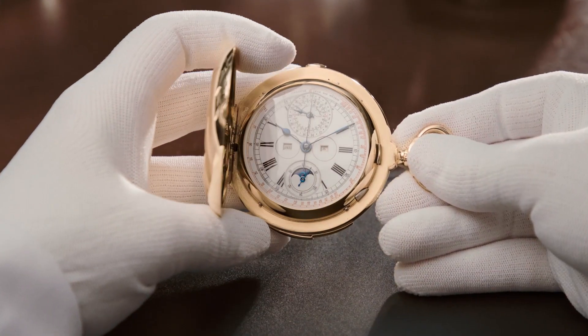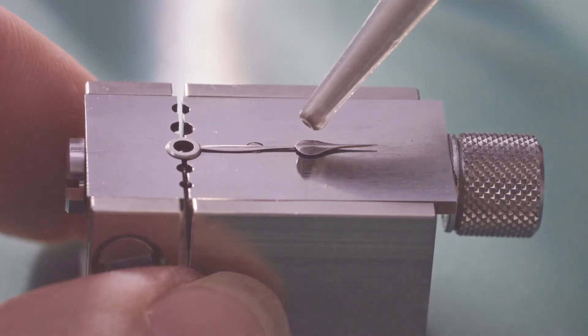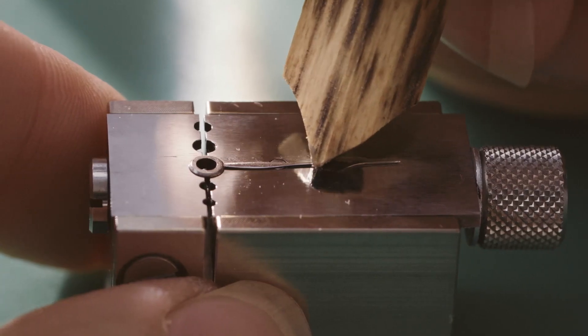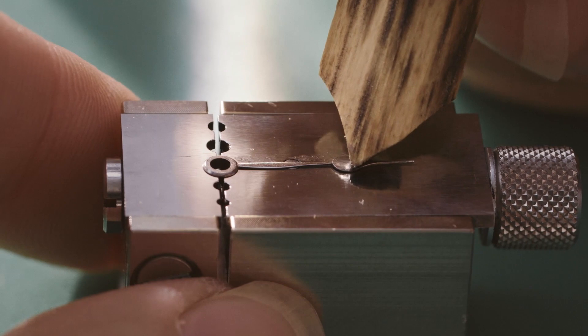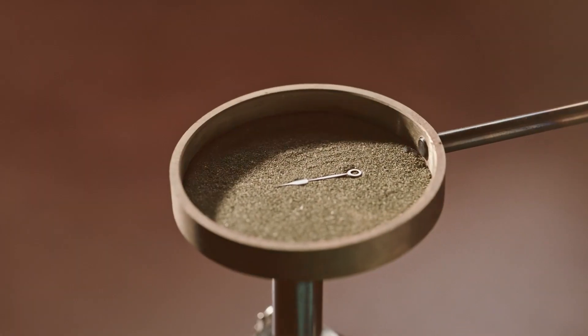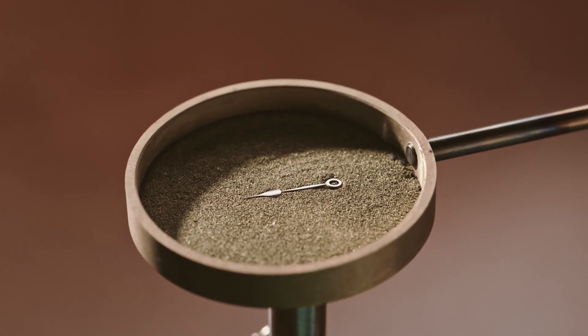Or, as on this other model of the 19th century, we sometimes blue them again. I remove the oxidation. The hands return to their original colour, a steel grey. Then, I heat them over a flame. In contact with heat, the steel changes colour and becomes blue again.